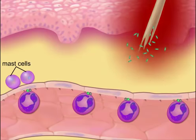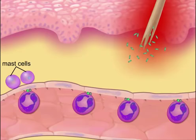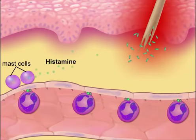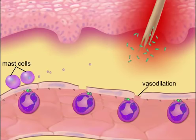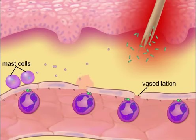The inflammatory mediators released by the injured tissue bring about changes in the environment that cause mast cells to degranulate and release histamine. Histamine causes vasodilation and an opening of the junctions between the endothelial cells, allowing fluid and leukocytes to leave the capillary and enter the infected tissue.